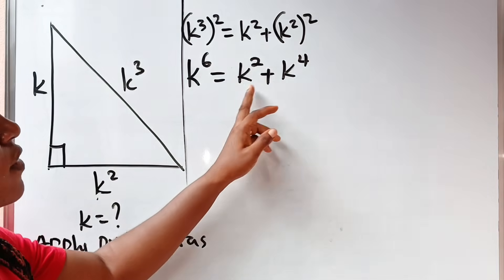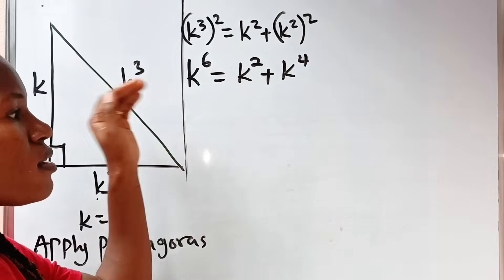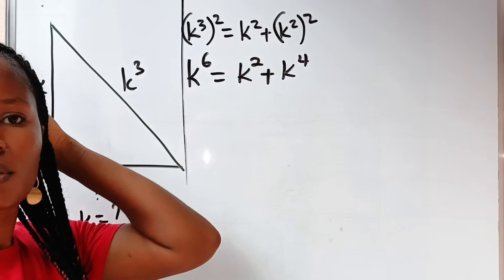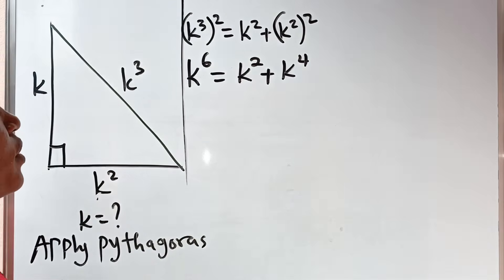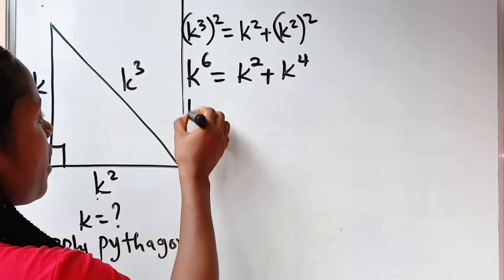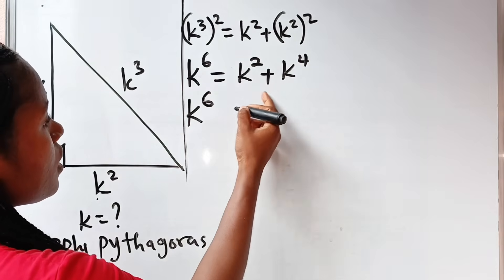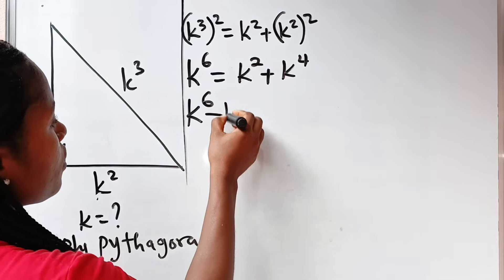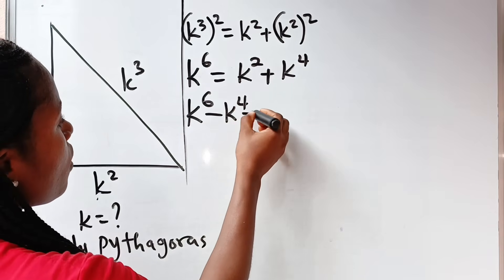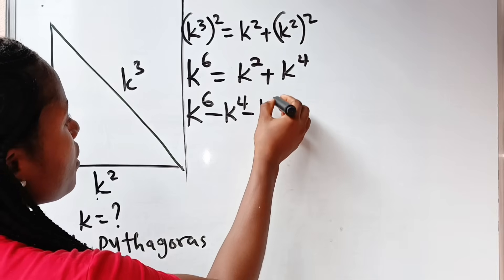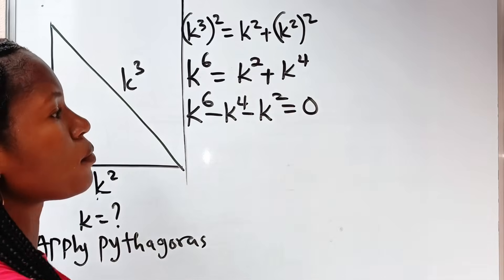Now let's transfer everything to one side of the equation. If we do that, we have K to the power of 6 minus K to the power of 4 minus K squared is equal to 0.